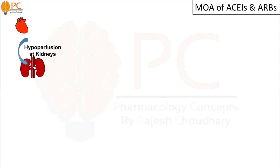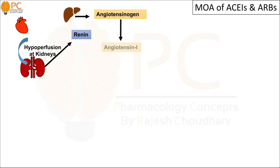To compensate for blood volume loss and hypoperfusion, the kidney produces renin, which is the initiator of the renin-angiotensin system. Renin promotes the conversion of angiotensinogen into angiotensin 1. Angiotensinogen is produced from the liver.